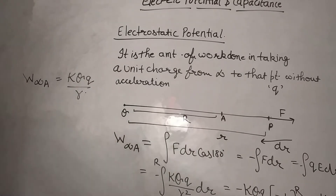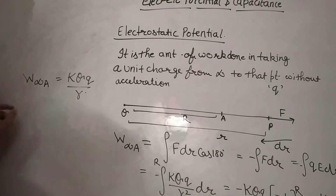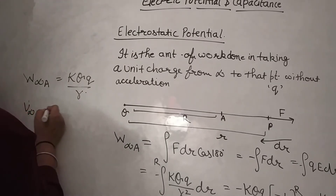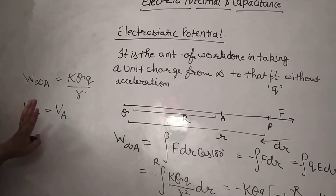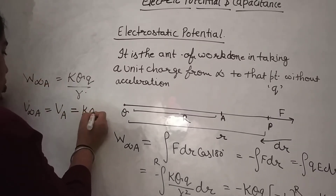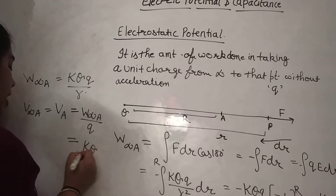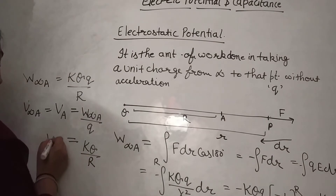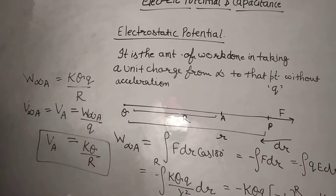Now what is the potential? It is the amount of work done per unit charge. So we divide the work done by the magnitude of the charge. Potential at A — which is normally the potential difference with respect to infinity — V_A equals W_infinity_A divided by q, which gives kq/R. Electric field is kq/r², and potential is kq/r.